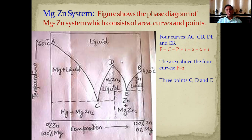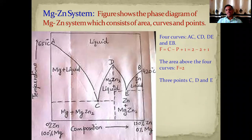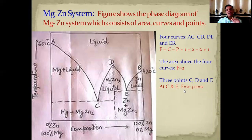This phase diagram also consists of three eutectic points: C, D, and E. These are points where different phases exist in equilibrium, or where different curves intersect with each other. Such points are called eutectic points. At every eutectic point, the degrees of freedom is equal to zero — the system is non-variant or zero-variant.